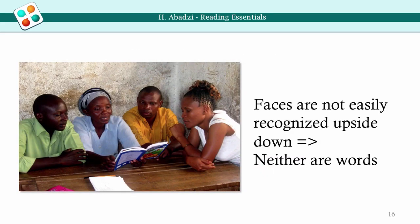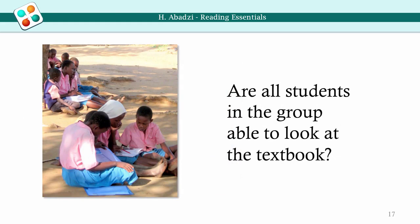Faces are not easily recognized upside down, and neither are words. Look at the eyes of the readers and the location of the book. Is the first person to the right able to read the text? Is she practicing reading right now? Remember from Module 3 that beyond the center of our vision, print looks blurry. A buddy reading project was implemented in Kenya, but it did not help many students read better. Are all students in the group able to read the textbook?